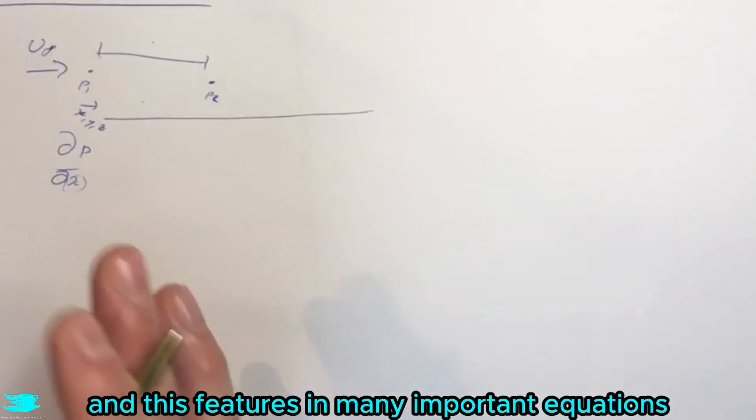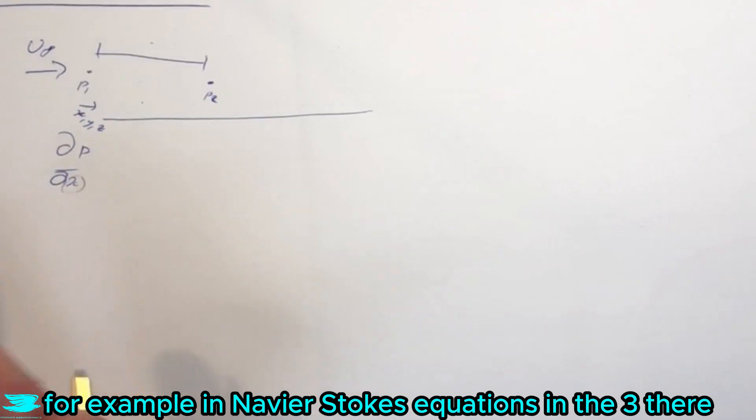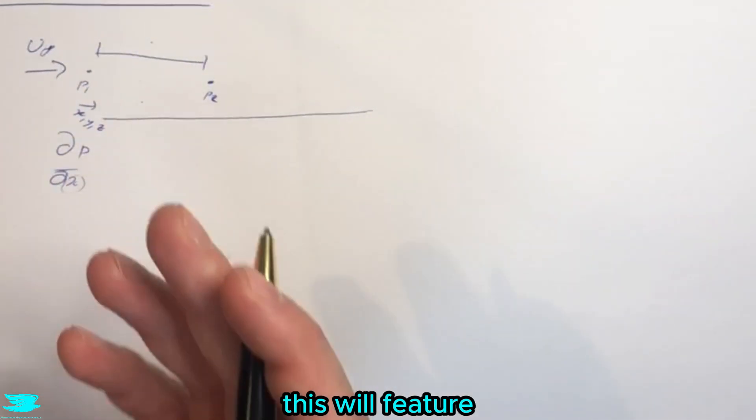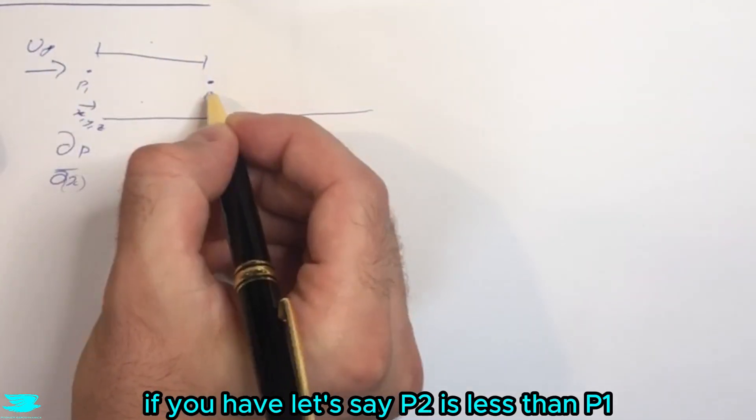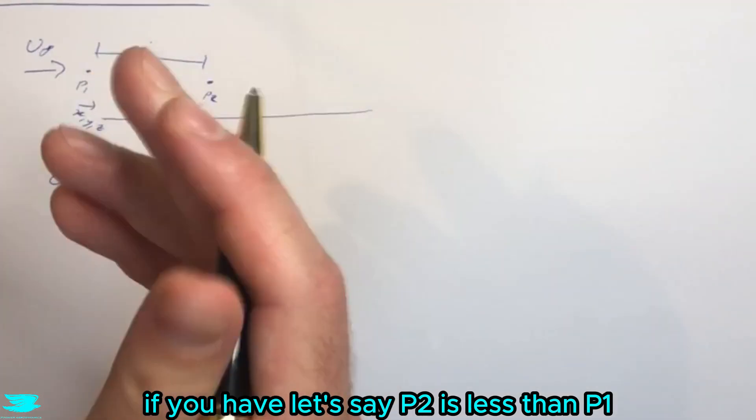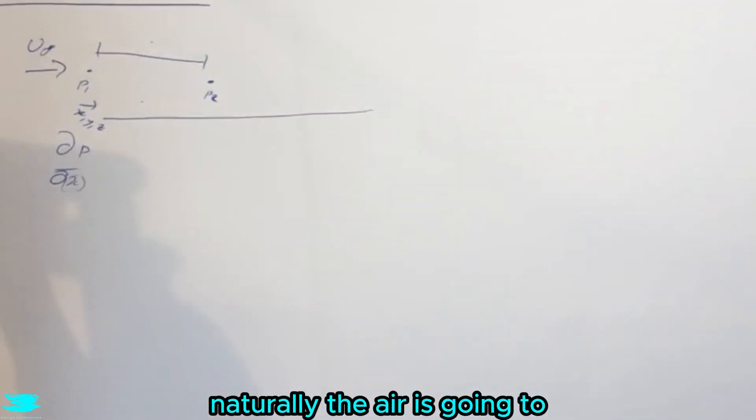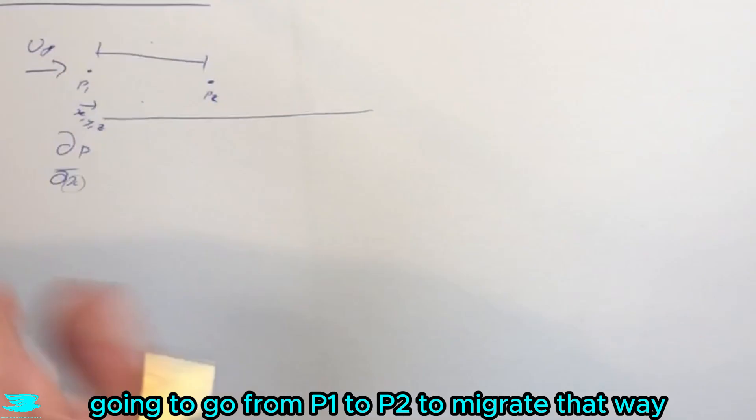This features in many important equations, for example in the Navier-Stokes equations, and this is a major driving force for flow. As I mentioned, if p2 is less than p1, naturally the air is going to go from p1 to p2 because flow always goes from high pressure to low pressure.